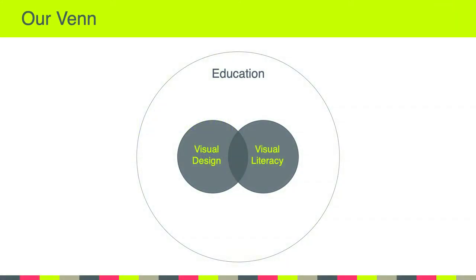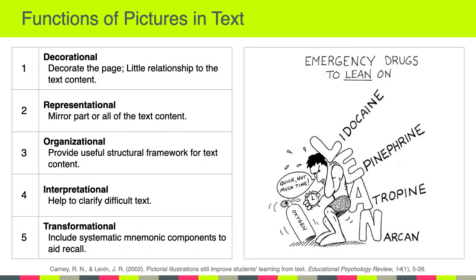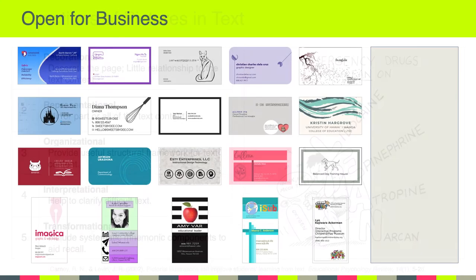Before we get into this week's content, I want to remind us where we left off last week when we introduced the concept of pictorial competence and the different functions graphics can play in relation to text, such as decorational, representational, organizational, and so on. I mention that because I want to encourage all of you to review some of your previous work, such as your business card designs. What kind of graphic elements did you use in those designs, and importantly, what were the functions of those graphics in relation to the text on your business cards?